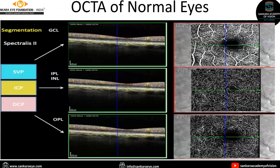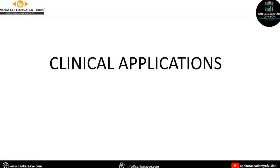This is an OCTA image of the macula where we can visualize the superficial capillary plexus, intermediate capillary plexus, and the deep capillary plexus.